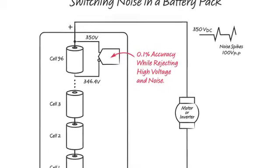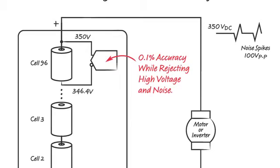In extreme cases, the top cell of the stack must be measured while rejecting 350 volts of common mode voltage, 100 volts peak-to-peak of common mode noise, and 1 volt peak-to-peak of differential noise.